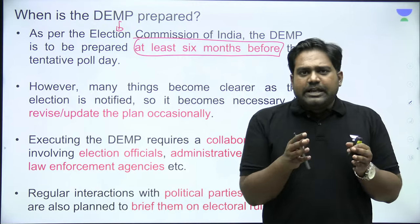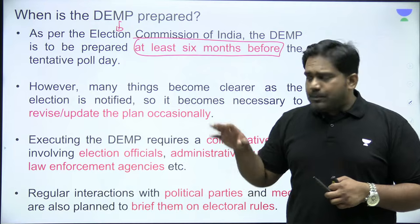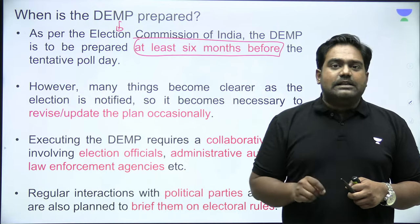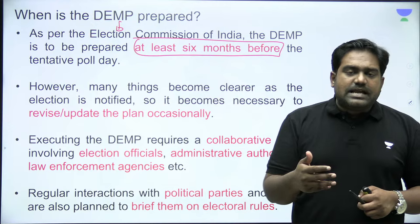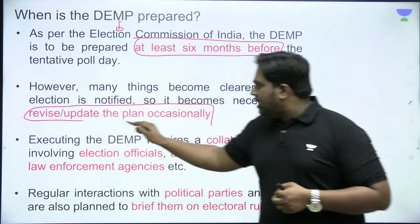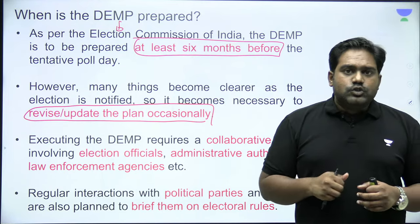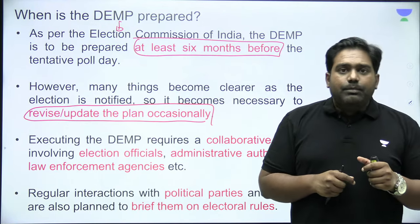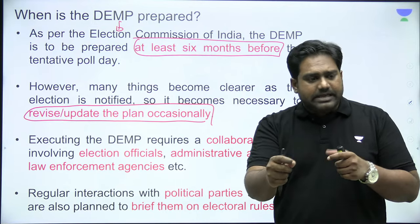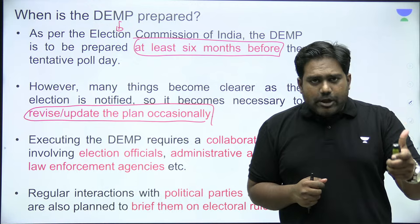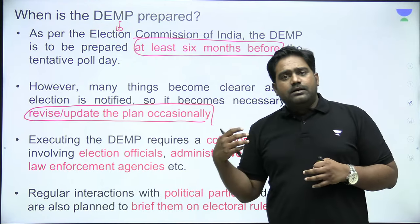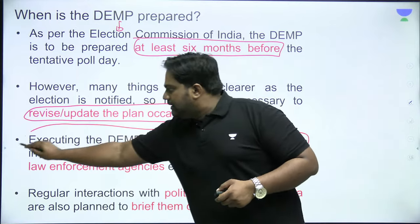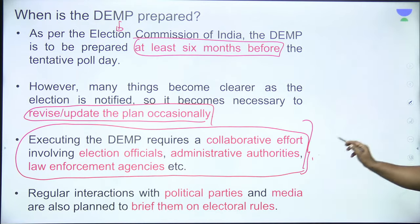This is a continuous process — it's prepared once and constantly updated. Once a new election cycle comes in, the District Election Management Plan is revised and updated by the Election Commission working with the concerned authorities. To implement this plan and conduct elections in a particular district, it requires extensive coordination between election authorities, administrative bureaucracy, and other stakeholders — including security forces, state-level bureaucracy, and officers of the Election Commission — to ensure the successful implementation of this plan.